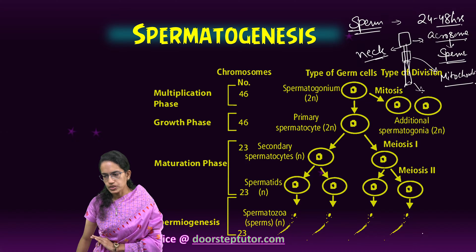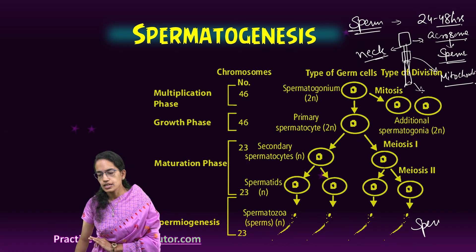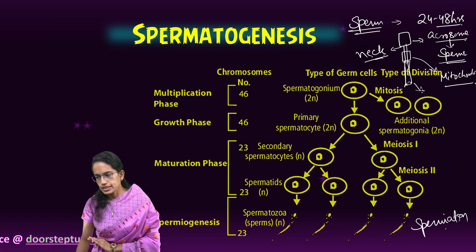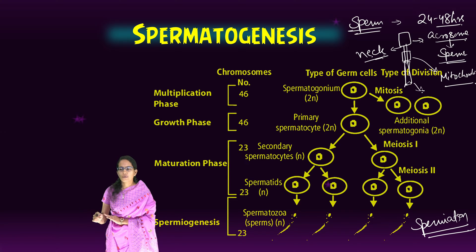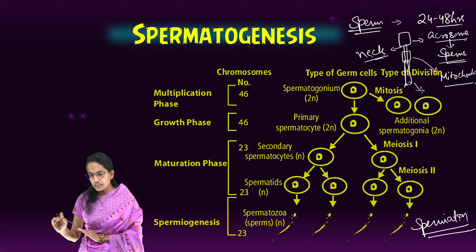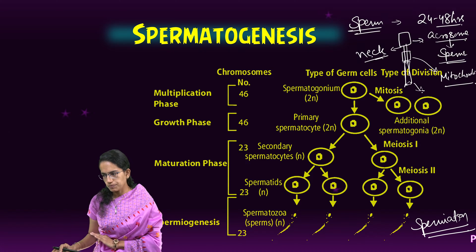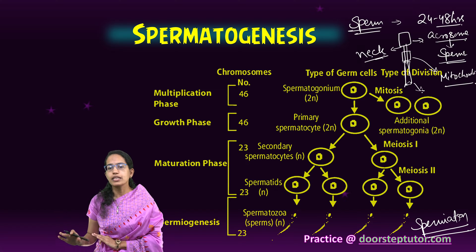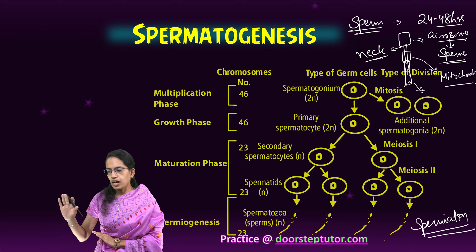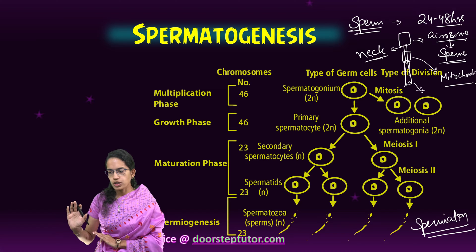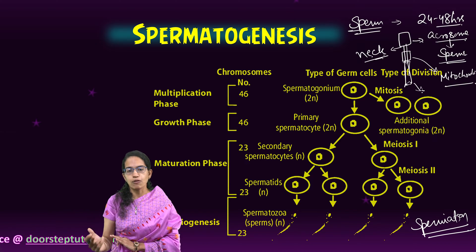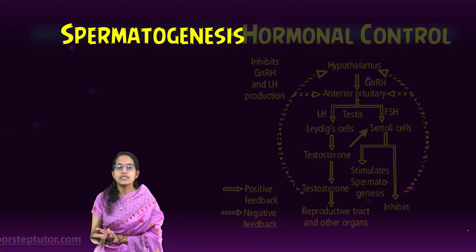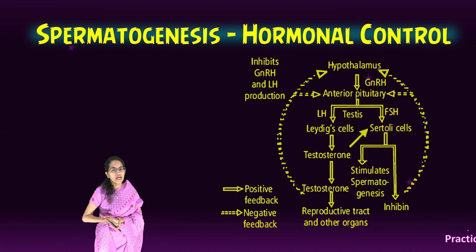The final important process, which is the release, is called spermiation — the release of sperms from the Sertoli cells. When the sperms are released from Sertoli cells, this process is known as spermiation. Sperms when released are stored in the epididymis and vas deferens for up to one month, where they get nutrition from the epithelium of the epididymis.